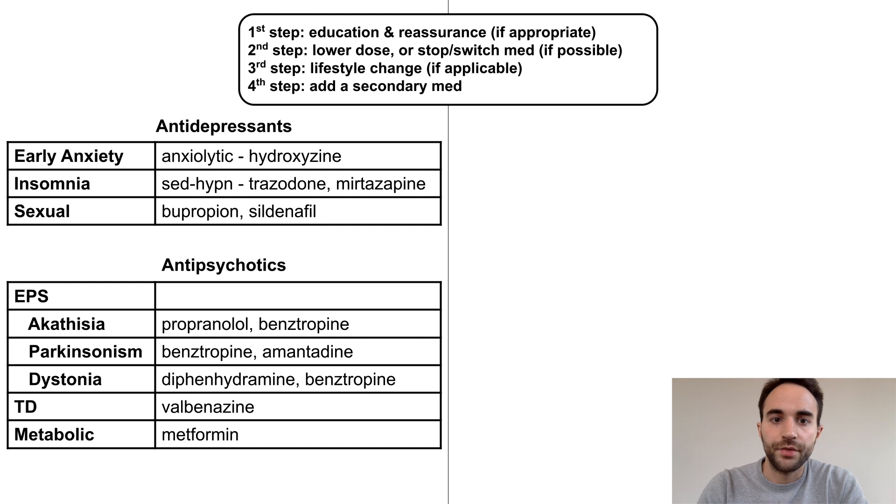For the antipsychotics, the three kinds of extrapyramidal symptoms can be managed with the meds listed here. Tardive dyskinesia can be treated with VMAT inhibitors, such as valbenazine. To limit metabolic side effects, consider adding metformin.